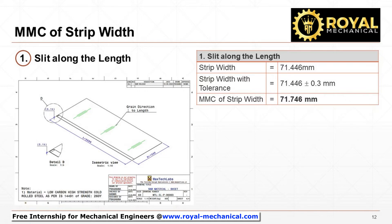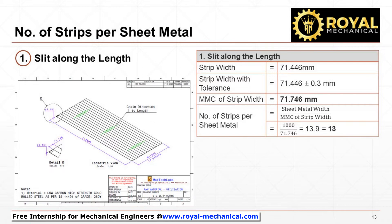The maximum material condition (MMC) for the strip width for option 1 will be 71.746 mm. Divide the sheet metal's width by the MMC of the strip width to calculate the number of strips produced from the sheet metal. We will get 13.9 strips. Practically, 0.9 strip is of no use; hence we can utilize only 13 strips.